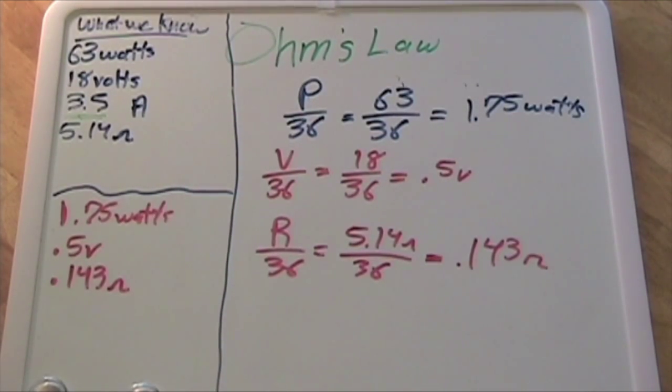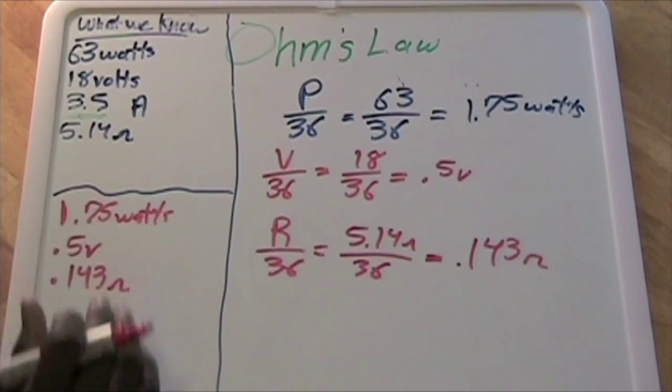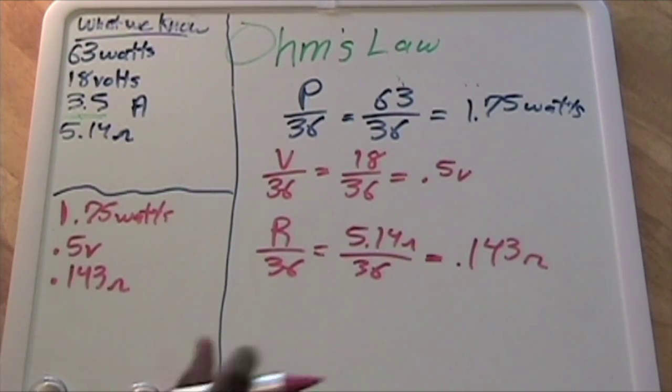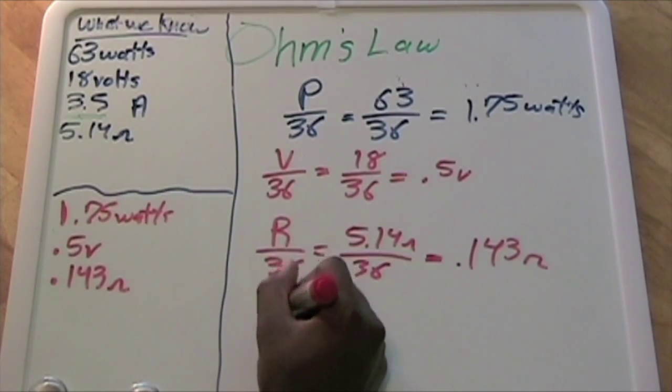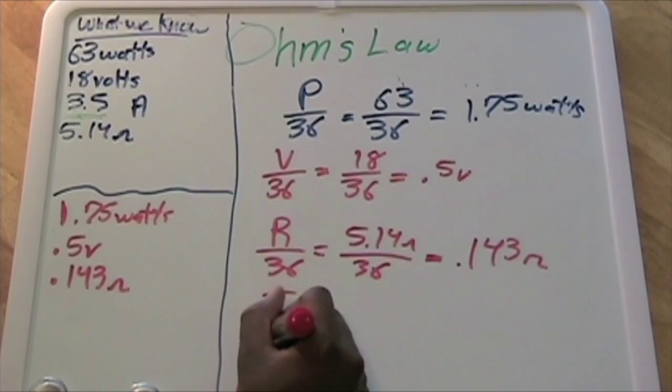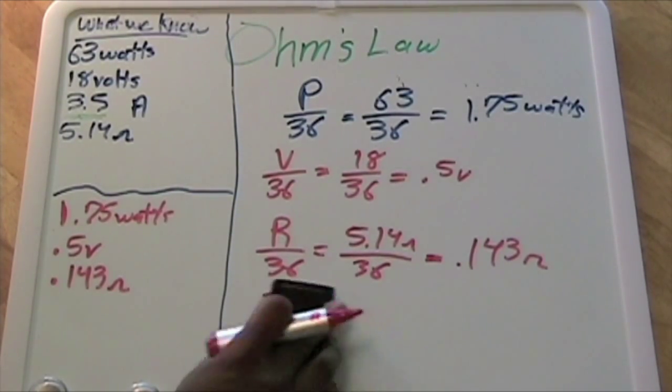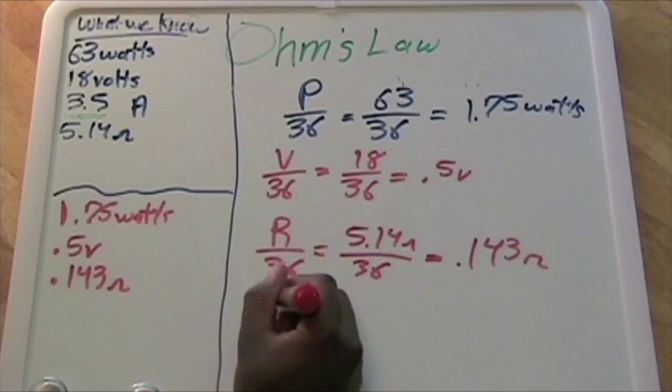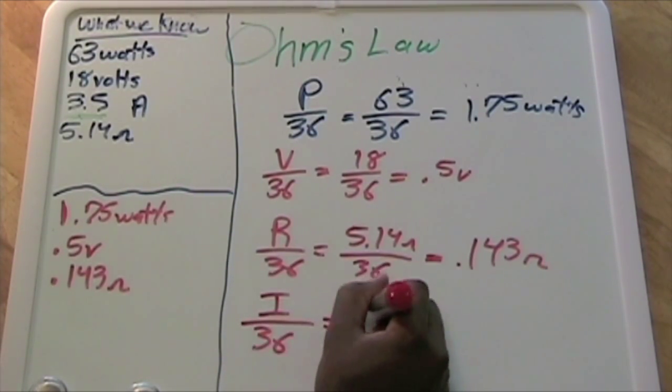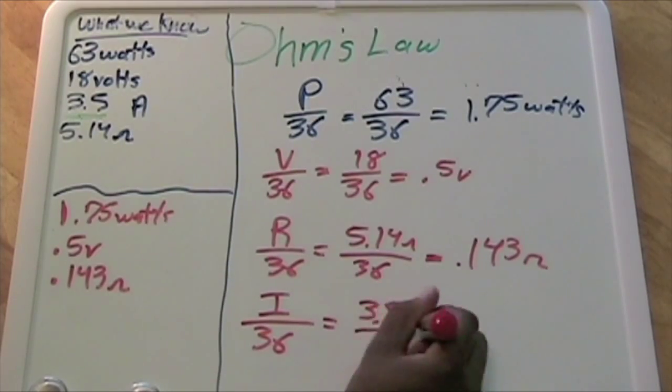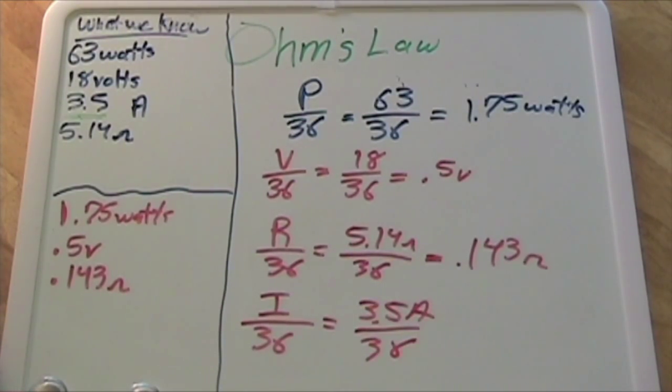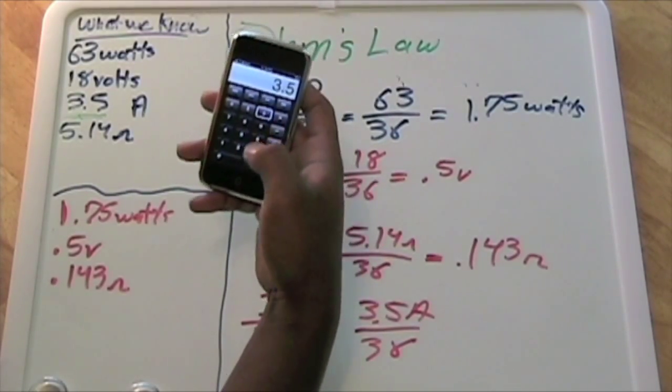The reason I skipped the amps is because in our system we are adding the voltage and the current is staying the same. We can't really apply the method of dividing by 36. I'll show you—if we check it, you'll see why. Let's say we're going to do I divided by 36, which equals 3.5 amps divided by 36. We're going to get 0.097 amps.